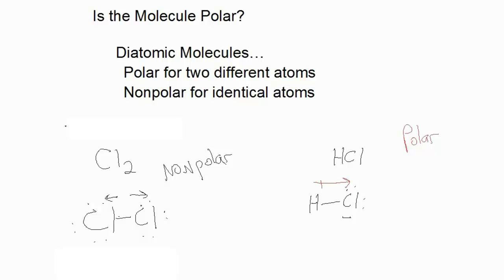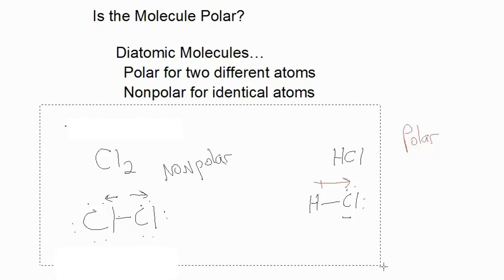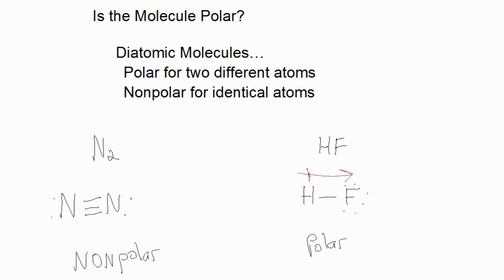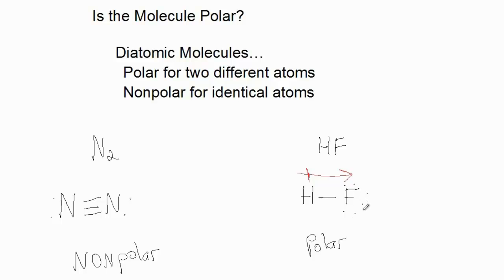Now try N2 and HF. The Lewis structure for N2 is two nitrogens with a triple bond between them — so this is nonpolar. HF is definitely polar. You have two different atoms with two different electronegativities, so there's a tug-of-war for electron density, and the fluorine will win because it has a higher electronegativity.